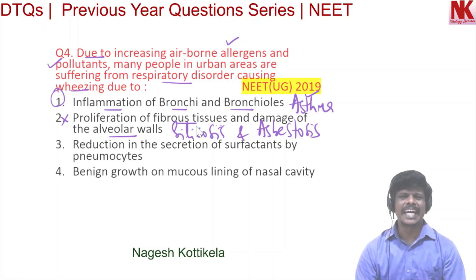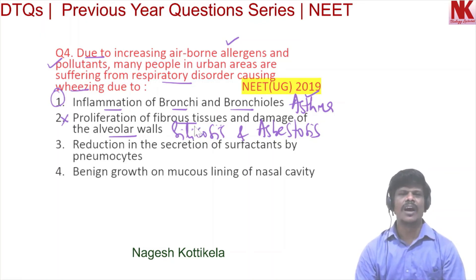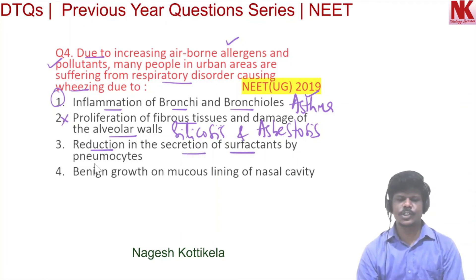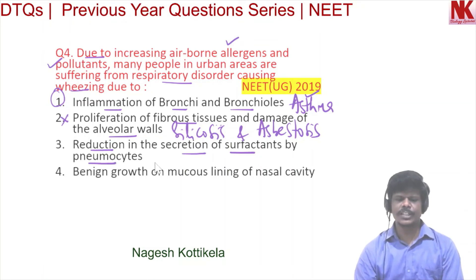Option three is reduction in the secretion of surfactants by pneumocytes — this is seen in a disorder called atelectasis.